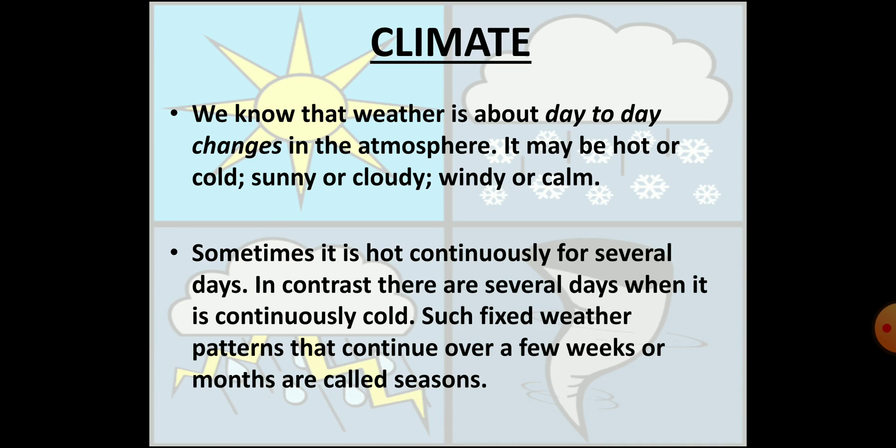Let's begin with the climate of India. But before that, let's understand the various terms used in this connection. You may have heard and used the word weather quite often. Weather is the daily state of the atmosphere. It includes day to day changes in temperature, rainfall and sunshine etc. The weather could be hot or cold, cloudy or windy, sunny or wet. When certain fixed weather patterns continue over a few weeks or months, they are called seasons.